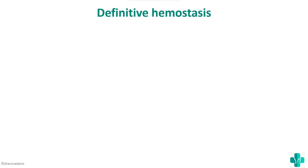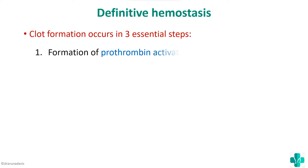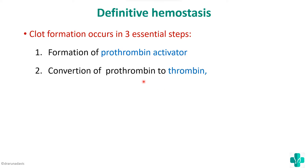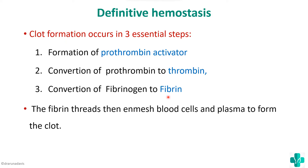There are three essential steps of clot formation. The first step is formation of a prothrombin activator, which activates prothrombin. Prothrombin is then converted to thrombin, and thrombin converts fibrinogen to fibrin. It is fibrin which will enmesh the blood cells to form a clot. So: prothrombin activator converts prothrombin to thrombin; thrombin converts fibrinogen to fibrin; fibrin finally enmeshes the blood cells to form the clot.